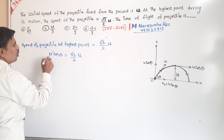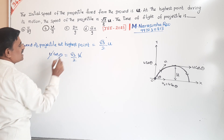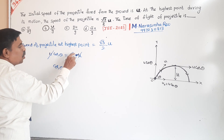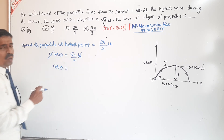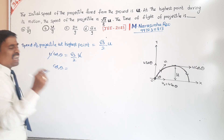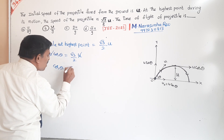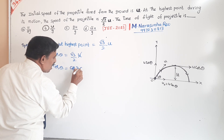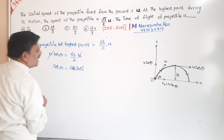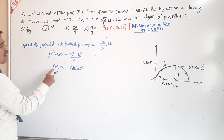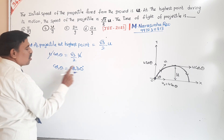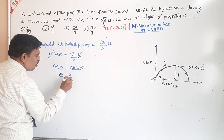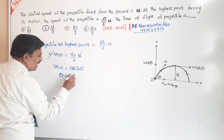At the highest point, U cos theta equals root 3 by 2 U. The U's cancel, so cos theta equals root 3 by 2, which is cos 30 degrees. Therefore, theta equals 30 degrees.